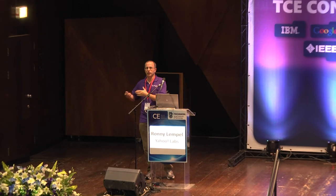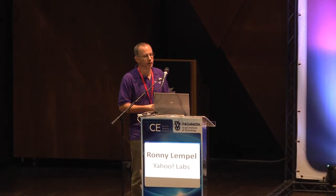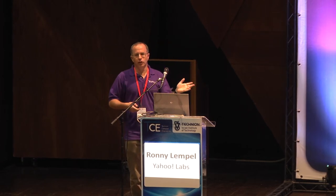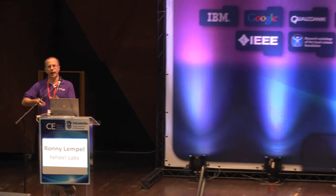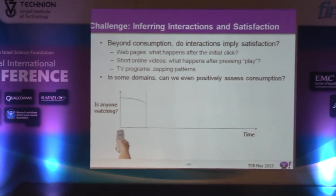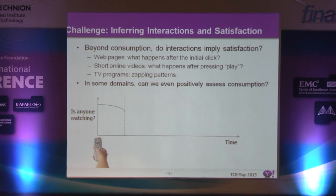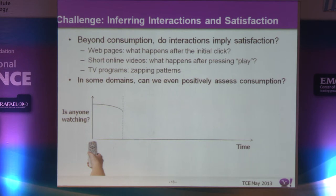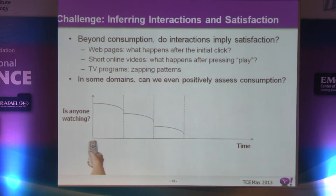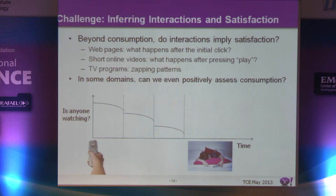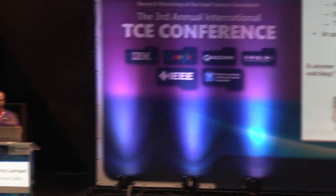In the TV domain, we're not even certain whether the user actually consumed the item. For example: is anybody watching the program currently on? If we have a zapping event — someone manipulated the remote control — we have high confidence someone was watching at that specific moment. But as time passes, that confidence diminishes. When the program ends, there's a good possibility people are no longer watching, even if the TV is on. Eventually, we can be fairly certain the TV is on but the person is asleep.